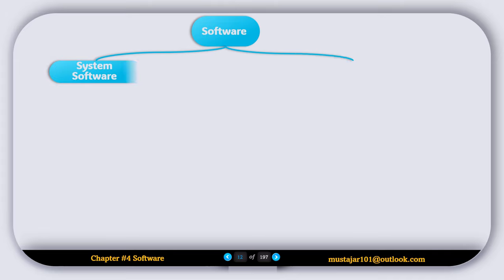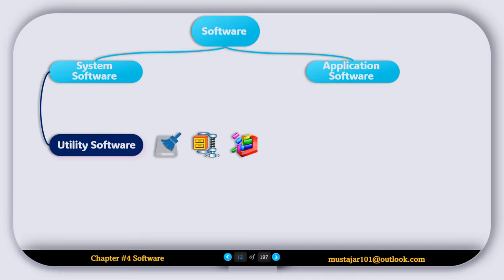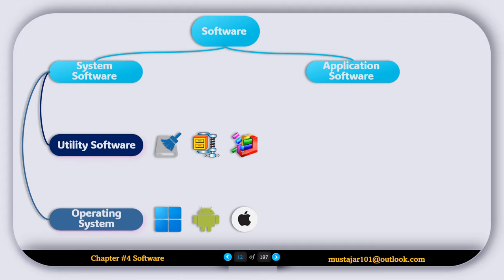To recap, software has two types: system software and application software. System software has two types — utility programs and operating systems. Utility program examples include disk cleanup, disk compression, encryption software, disk defragmentation, and antivirus software. Operating system examples include Windows, Android, iOS, Linux, and Unix.